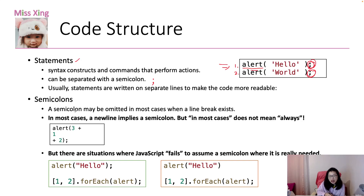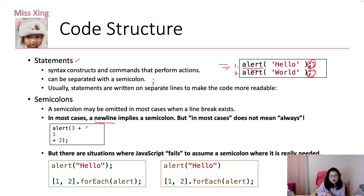Talking about a semicolon — in JavaScript it's not mandatory to have a semicolon. In most cases, if you don't write a semicolon at the end of a statement, JavaScript will handle it. In most cases a new line implies a semicolon. So here we have alert with '3 + 1 + 2' — JavaScript will think you have a semicolon there. But not always.